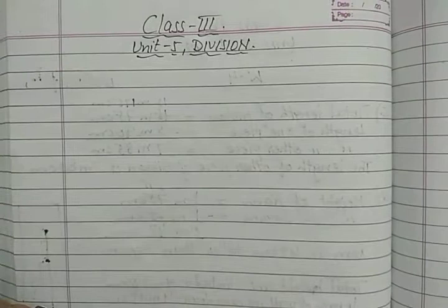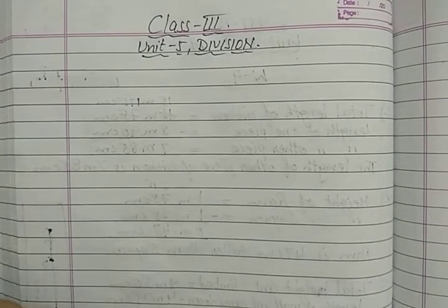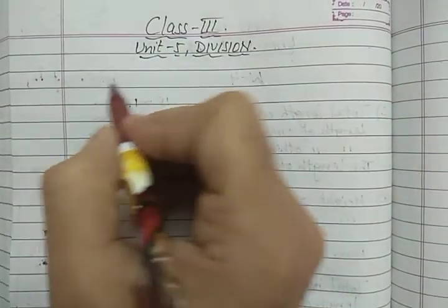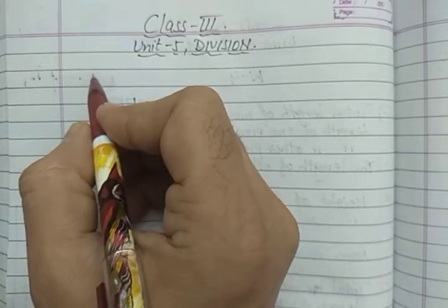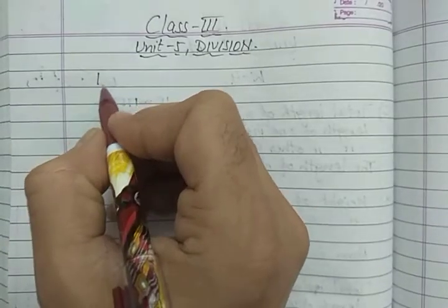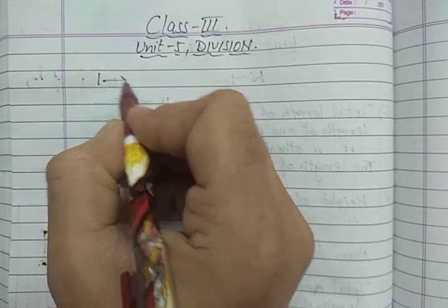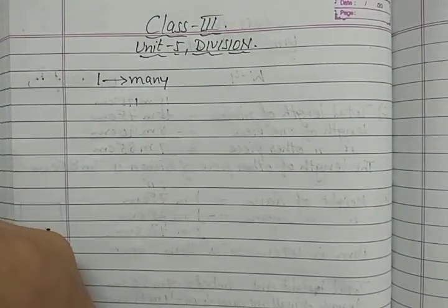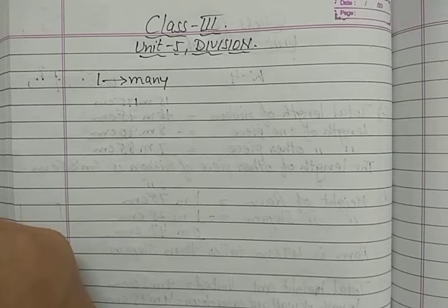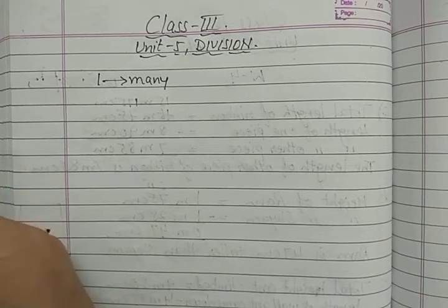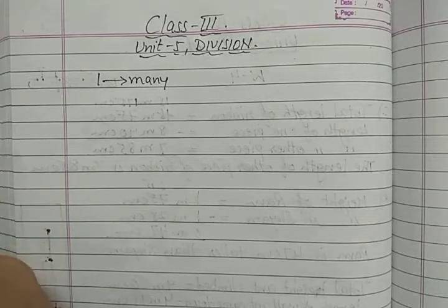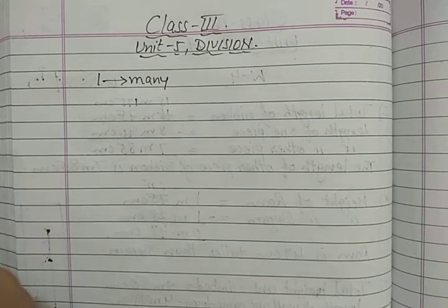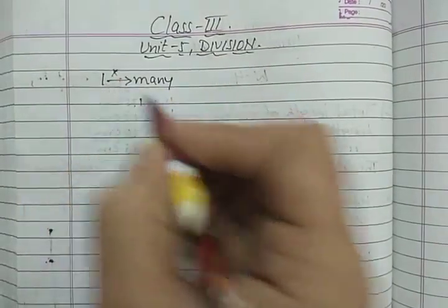Do you remember in which situation we have to multiply? Multiplication ke situations — hum kab multiply karte the? When one thing is given and we have to find out many. One ka humein many banana padta tha. Suppose the cost of one toffee is given and you have to find out the cost of many toffees. Cost of one chocolate is 5 rupees, you have to find out the cost of three chocolates. So one chocolate ki cost di, aur teen ki banana hai — so we have to multiply. One to many ke liye hum multiply karte the.